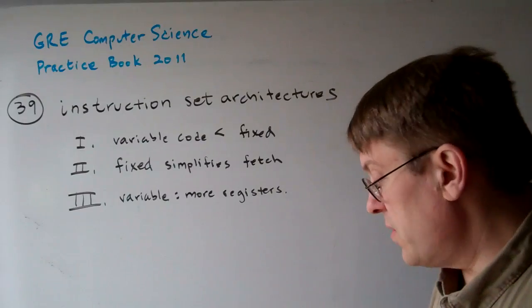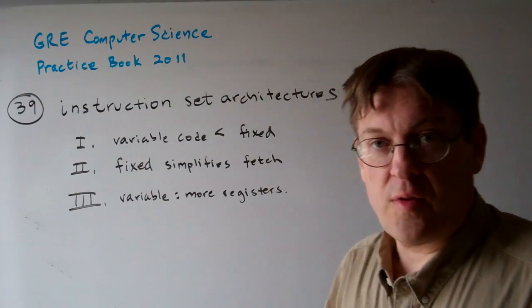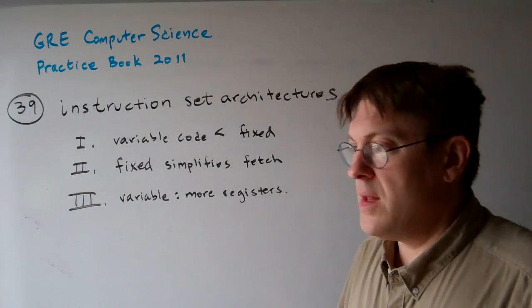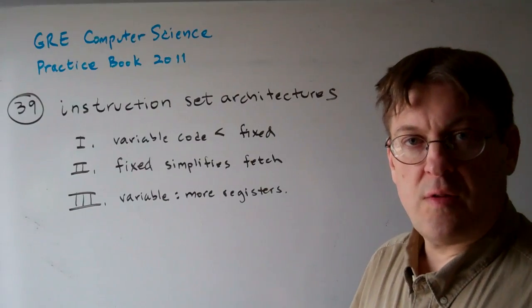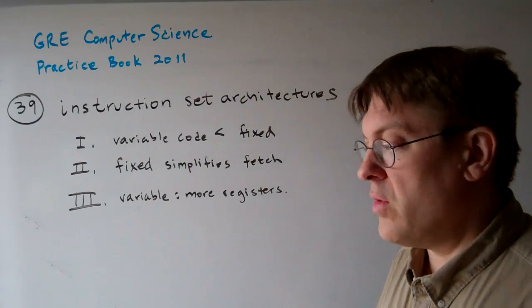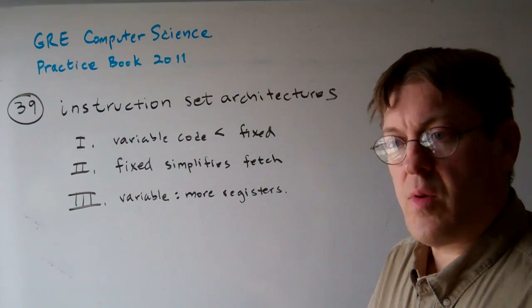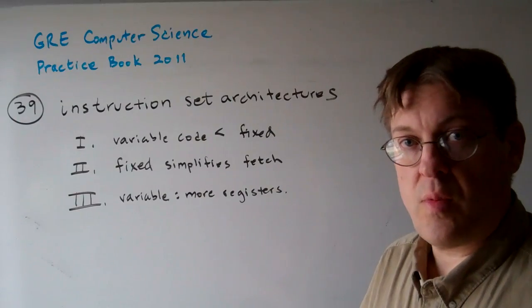Well, this goes back to the CISC versus RISC debate. In the old days, complex instruction set architectures were required because the space required to contain the instructions was the most important thing to worry about or one of the important things to worry about.